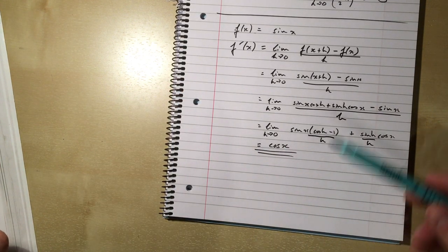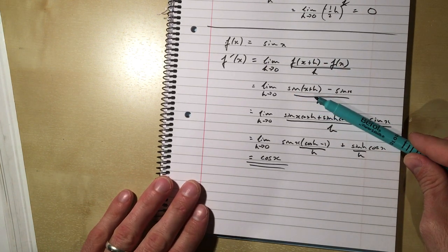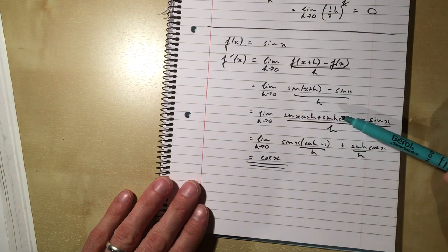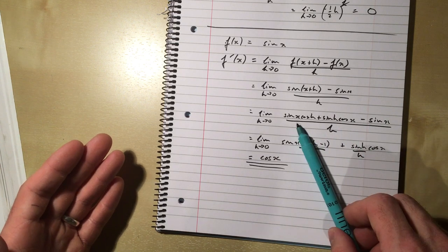And a very similar thing happens if you start with cos x there, cos of x plus h here, and then you get cos cos, take away sin, sin, factorise the cos x terms,